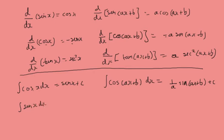The integral of sine x dx equals minus cosine x plus c. The integral of sine(ax + b) dx is negative 1 over a cosine(ax + b) plus c.